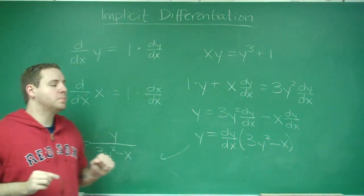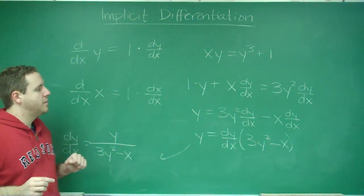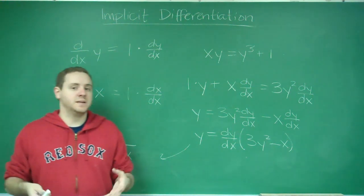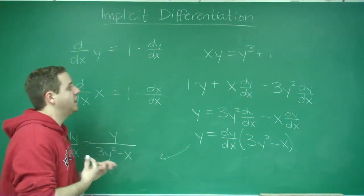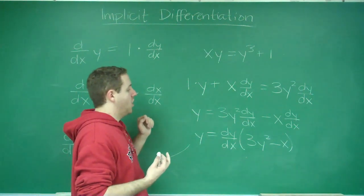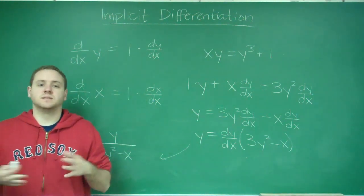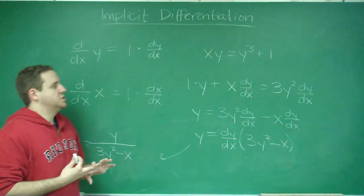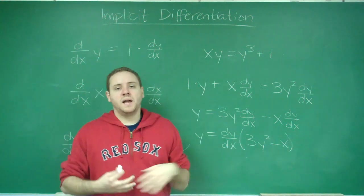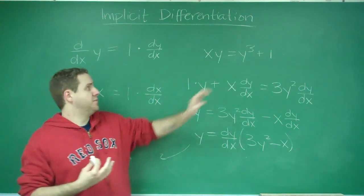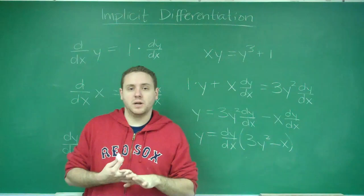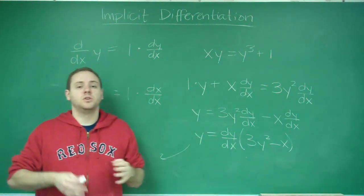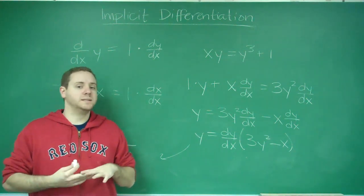You can see that when you do an implicit differentiation problem, many times your answer for your derivative is going to have y's in it as well as x's. That's perfectly fine, because your original function also had y's. It's typical that the derivative will too. The key for implicit differentiation problems is you treat y as just another function — if you have it times x, you have to do product rule or quotient rule. And any time you take the derivative of a y term, you have to multiply by dy/dx.